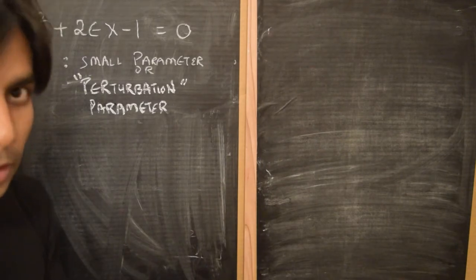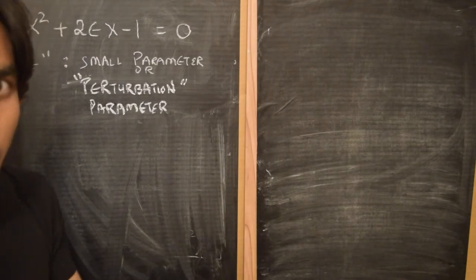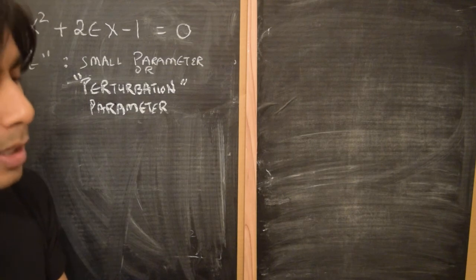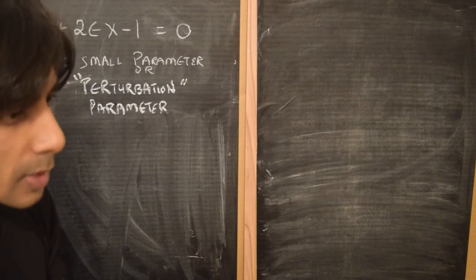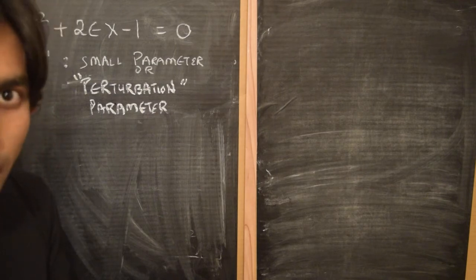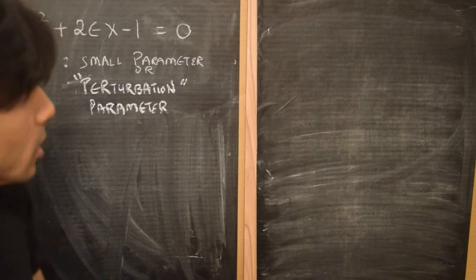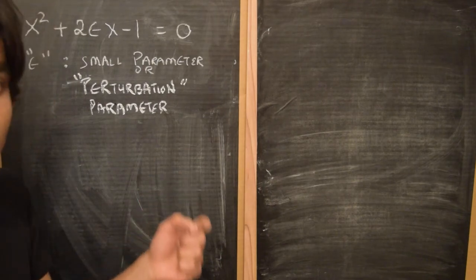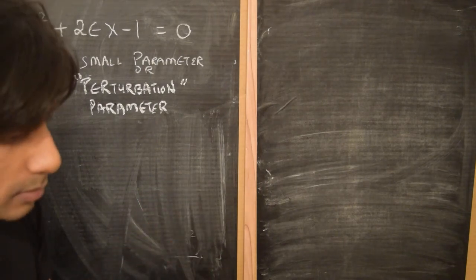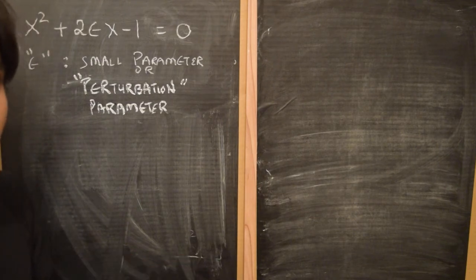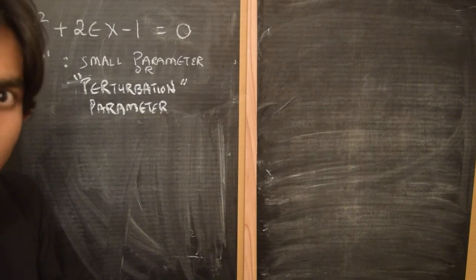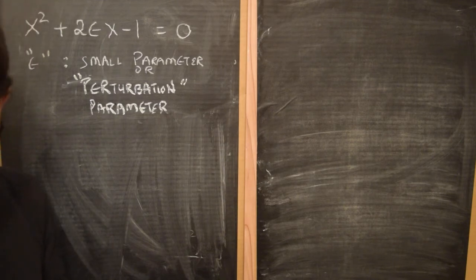So now we're getting into perturbation theory proper, which is — let's pretend for a moment that we don't know how to solve this quadratic equation. But we've been able to identify a small parameter in this equation, which we've written as epsilon. And the small parameter is also called a perturbation parameter. The idea now is to look for a solution of this equation in the form of a power series in powers of the perturbation parameter epsilon.